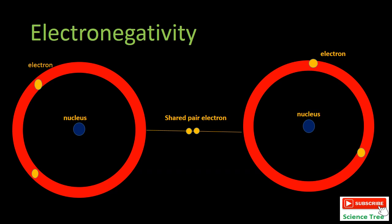Electronegativity is nothing but the tendency to attract a shared pair of electrons towards itself in a molecule. Electrons are trying to move on both sides, so electronegativity means to attract a shared pair of electrons.